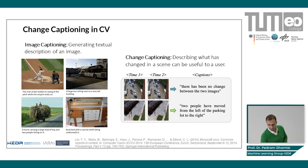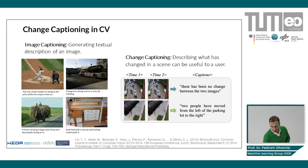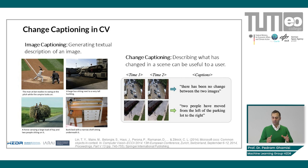Here I provide two examples. In the first pair of images, we have one scene captured at time one and time two — the result of change captioning should be a text like 'there has been no change between the two images.' In the second pair of images, the caption should be something like 'two people have moved from the left of the parking lot to the right.'